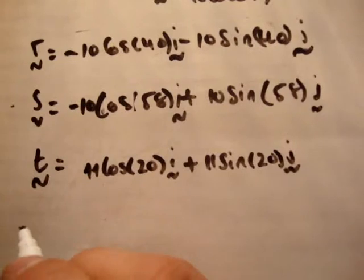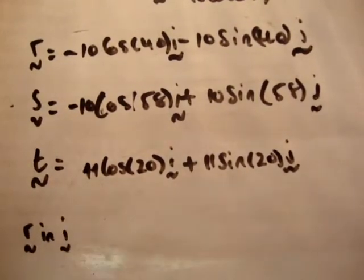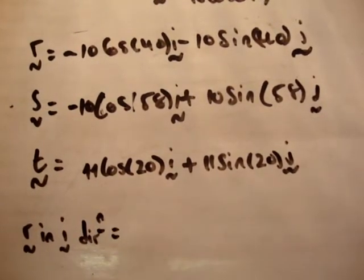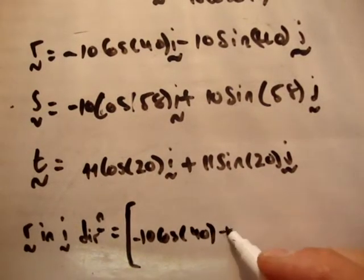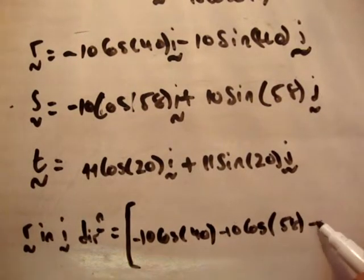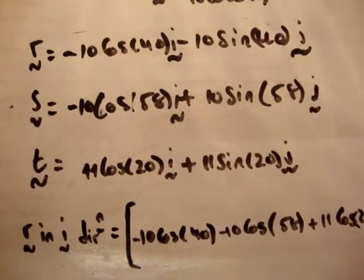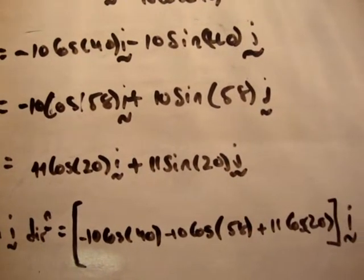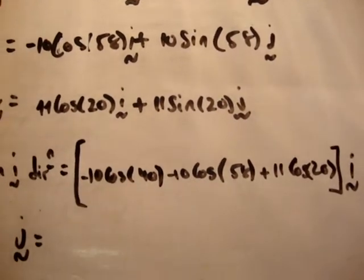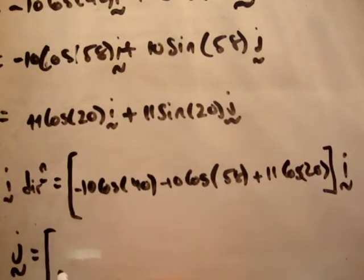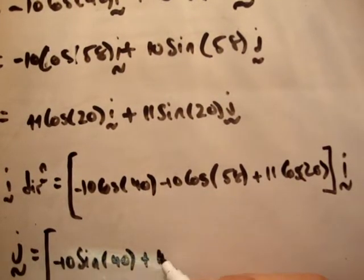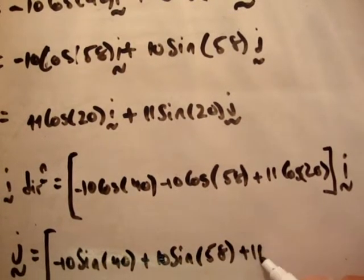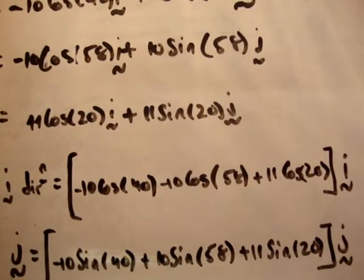So we'll say we'll talk about r in the i hat direction. It's equal to minus 10 cos 40 minus 10 cos 58 plus 11 cos 20. Similarly for the j hat direction, we have minus 10 sin 40 plus 10 sin 58 plus 11 sin 20.